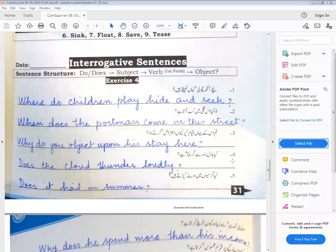We are on sentence number four. Does the cloud thunder loudly? Thunder means to make a loud noise. Since cloud is a singular subject, we use does. Number five: does it hail in summer? Hail means small pieces of ice that fall like rain. In English, we say hail, H-A-I-L. Does it hail in summer?